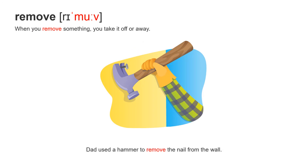Next word: remove. It has two syllables, accent on the second syllable — remove. When you remove something, you take it off or away. Dad used a hammer to remove the nail from the wall. Remove.